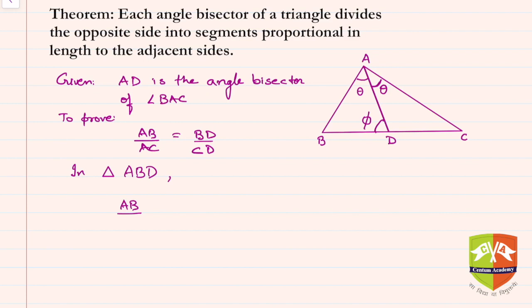Isn't it? Similarly, or rather let's first complete this. So this means AB by BD is equal to sin phi by sin theta, clearly.